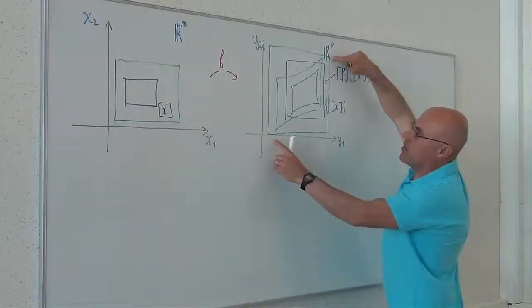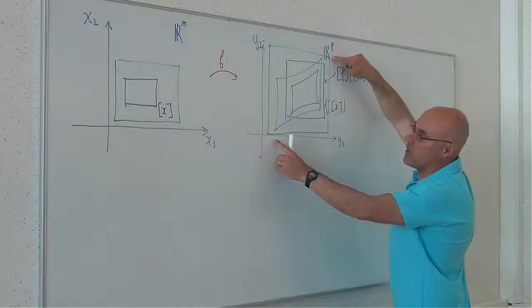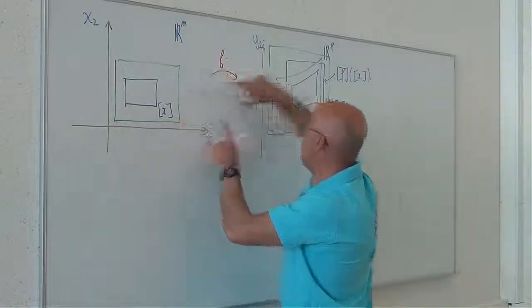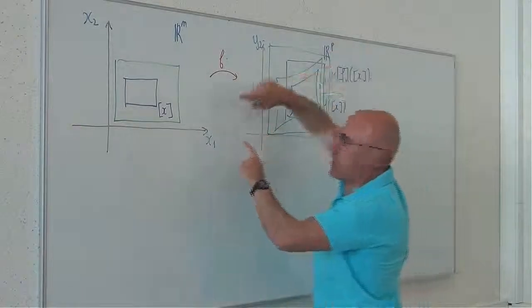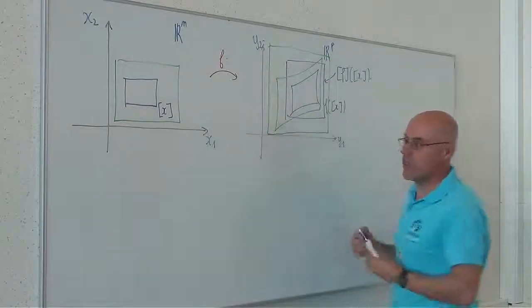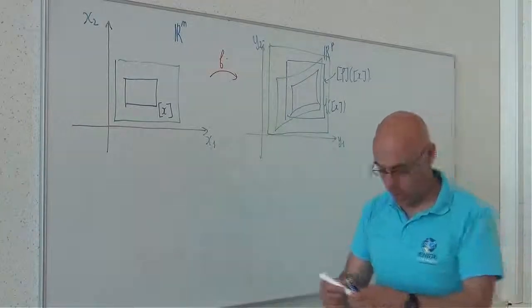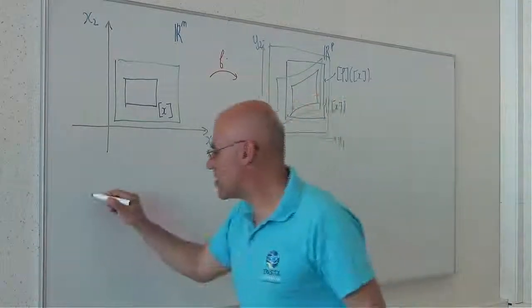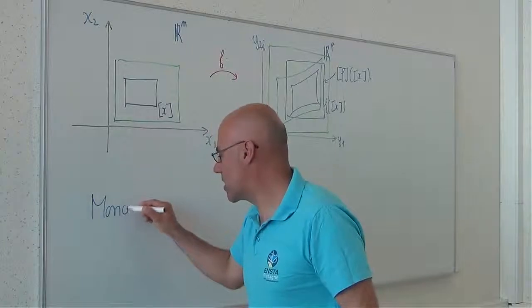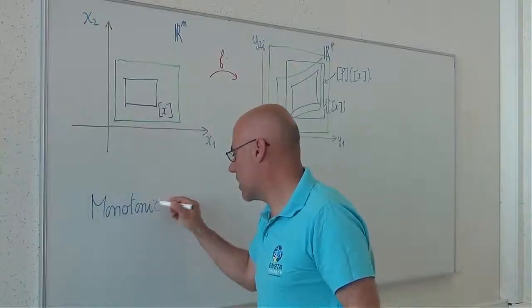If the inclusion function, the image by the inclusion function of the green box is larger than for the blue box, then I will say that the inclusion function is monotonic. So what is a monotonic inclusion function?